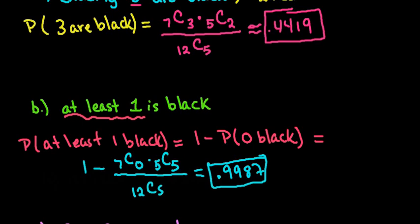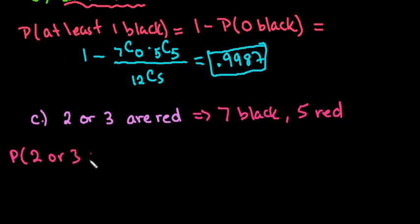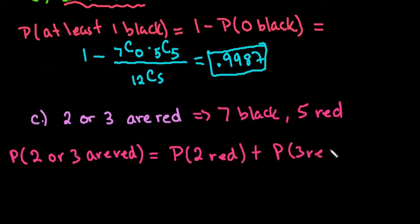And then I have one more. If it says the probability of 2 or 3 are red, remember that we have 7 black, 5 red. So if we're looking for the probability that 2 or 3 are red, this uses the OR rule, which is addition. So you would do the probability of 2 red plus the probability of 3 red.